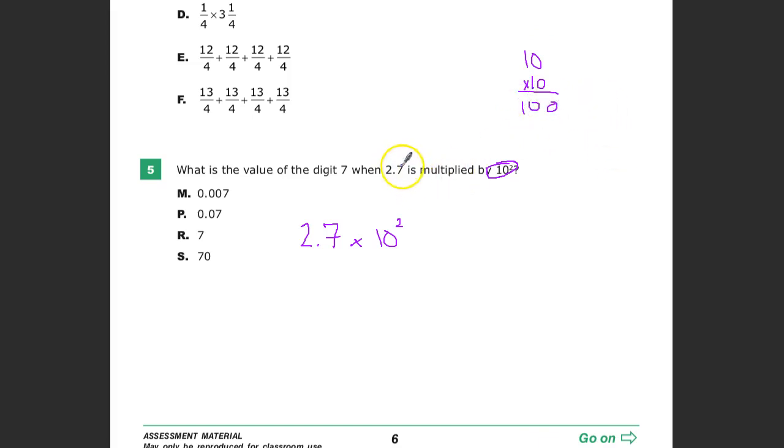So really, they want to know, 2.7 is multiplied by 100. And then they want to know something about what's the value of 7.